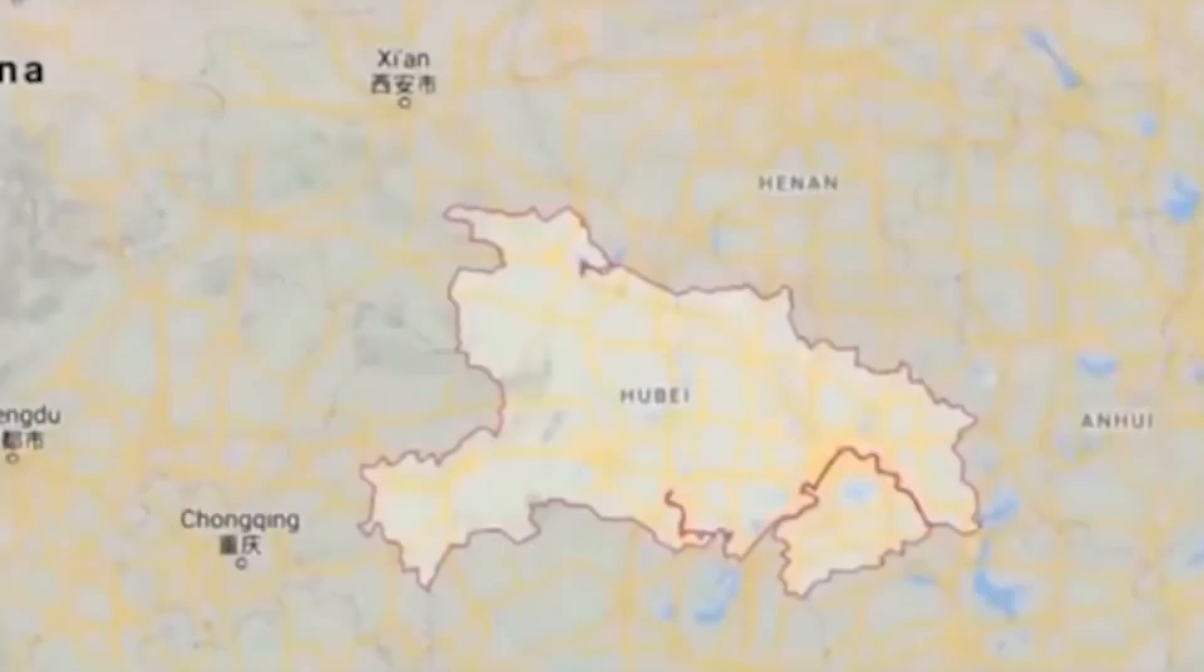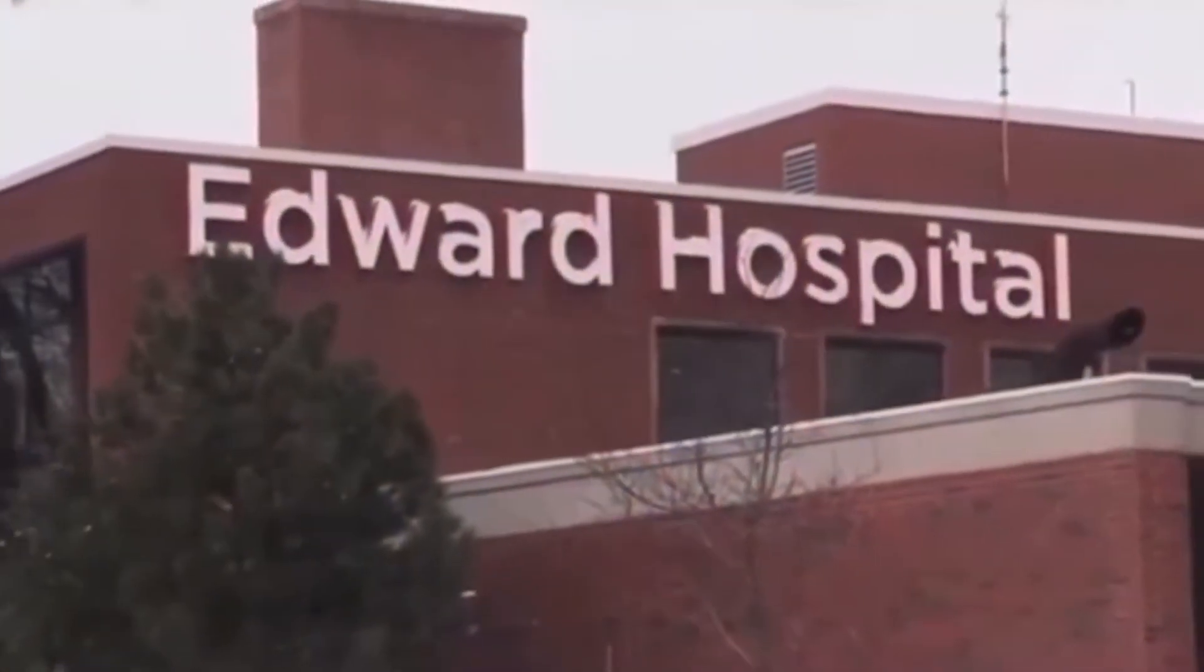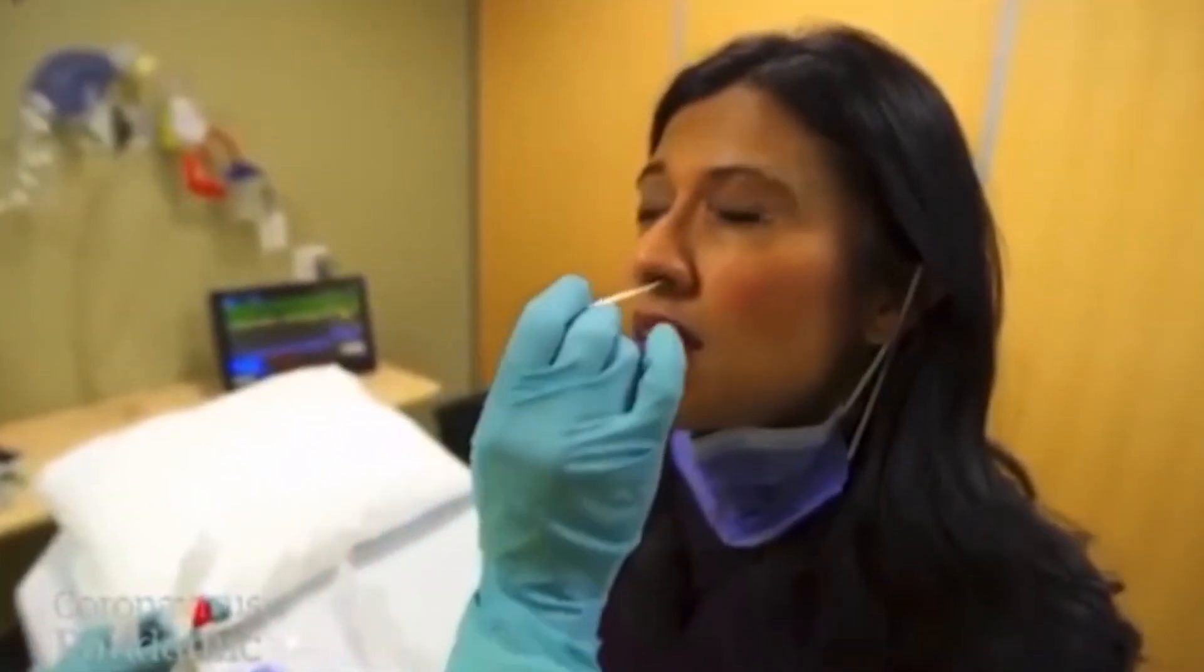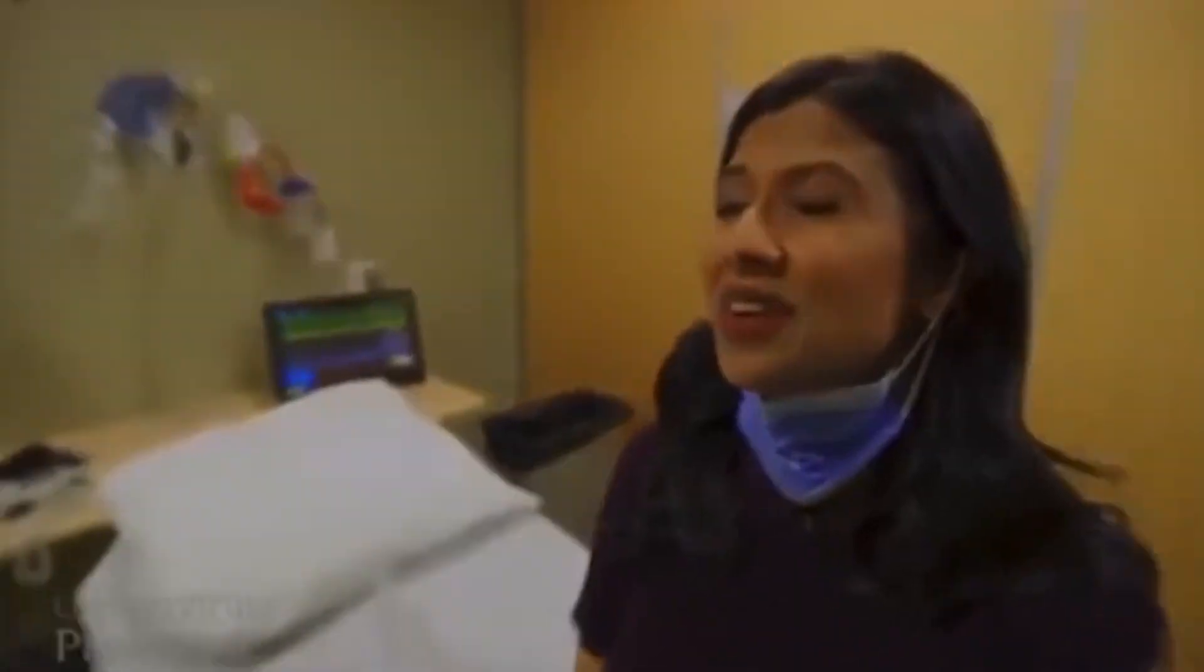Let's take a look at the first case of transmission in Illinois. A woman traveled to Wuhan, came back, and both she and her chronically ill husband ended up testing positive. Medical authorities then tracked over 300 people who had had close contact with them to see who acquired the virus. Guess what? Zero positives.